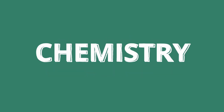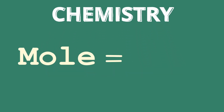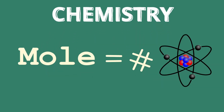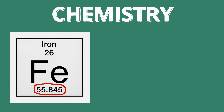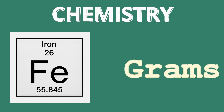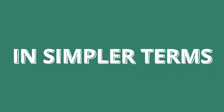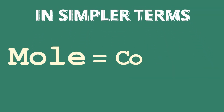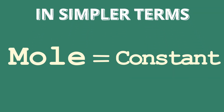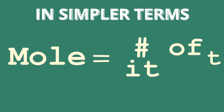What does that mean? In chemistry, a mole defines the number of atoms needed for an element's atomic mass to be equal to that weight in grams. In simpler terms, it is a constant that represents a number of items.